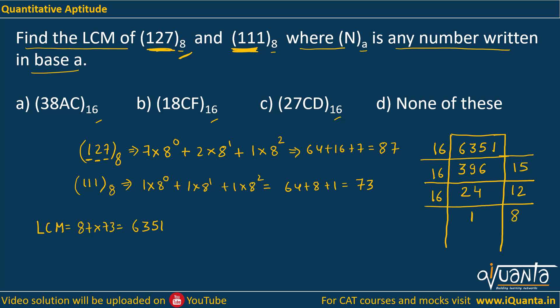Now, to write the answer, start from the last quotient 1, then append all the remainders in reverse order. We have 1, 8, then 12 and 15. But in hexadecimal, we have digits 0-9, and then 10 is written as A, 11 as B, 12 as C, 13 as D, 14 as E, and 15 as F.